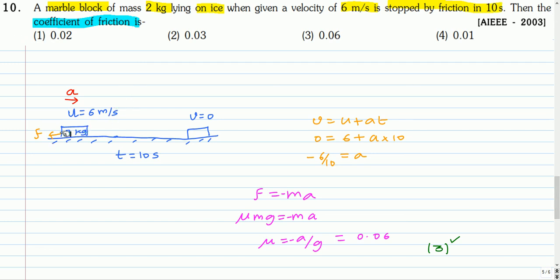So this is the marble block of mass 2 kg. It has got a velocity of 6 m/s per second, and it stops after some time, and the velocity becomes 0, and the time it takes to stop is 10 seconds.